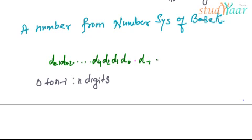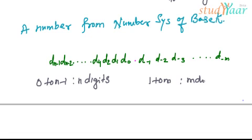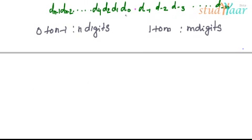The fractional part has digits d-1, d-2, d-3, and so on up to d-m. So we have m digits in the fractional part. This is a number in the given number system of base k. Now let's understand what the equivalent value of this number in base k would be in the decimal number system.